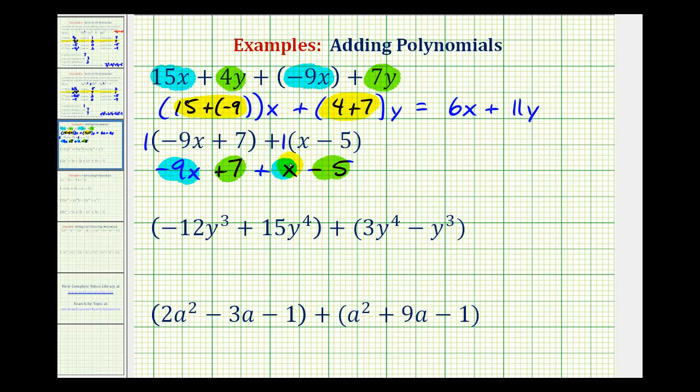One more thing that can be helpful is for this x, we could write this as 1x. So now to combine the x terms, let's see if we can skip this step here. We would have negative 9x plus 1x, and since negative 9 plus 1 is negative 8, we'd have negative 8x, and then this would be a positive 7 minus 5, which is positive 2, so we have plus 2.